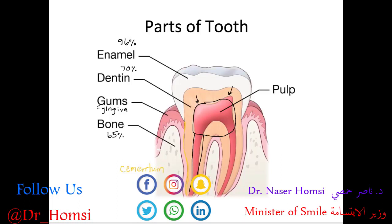The cementum is a thin, hard tissue that covers the root of a tooth and is about 65% mineral — similar to bone. Another structure is this light pink tissue running throughout, almost continuous with the gingiva. The structure that connects the tooth root to the bone is called the periodontal ligament, or PDL for short.